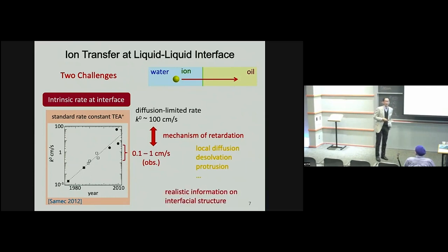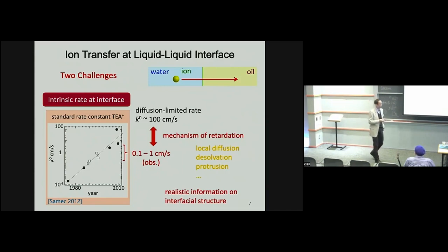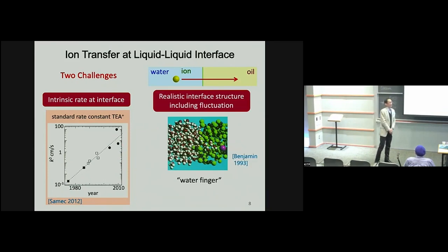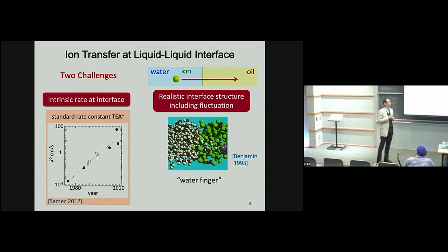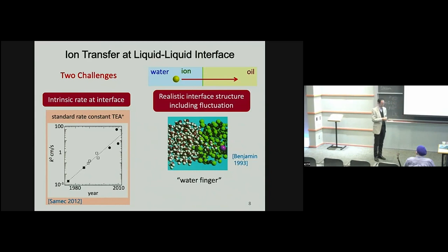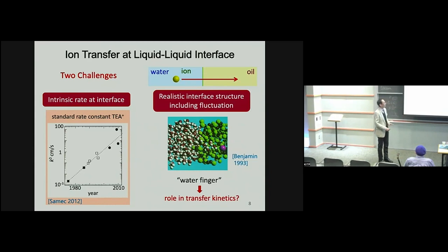In order to understand these mechanisms, realistic information about interface structure is essential. The second challenge is how to understand the realistic interface including fluctuations. Liquid interfaces are very dynamic and fluctuating. As first reported by Ilan Benjamin, when ions move from the water phase to the oil phase, they follow water molecules and form water finger structures. I was interested in the role of these fluctuations in transfer kinetics.